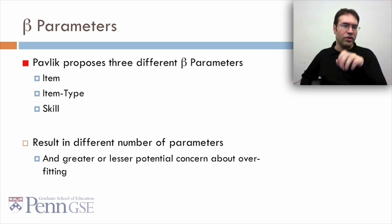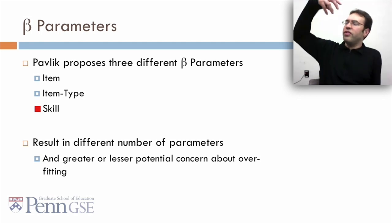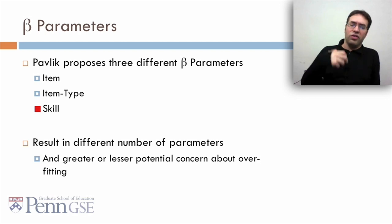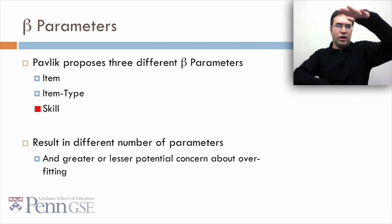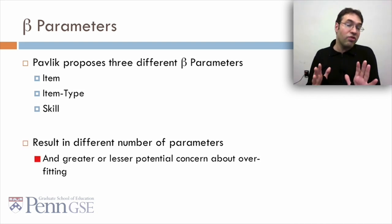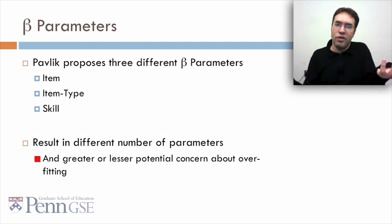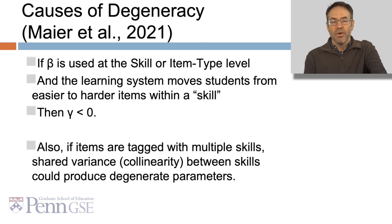So for beta parameters, Pavlik proposes three different beta parameters: Item, item type, and skill. These three approaches result in different numbers of parameters, and greater or lesser potential concern about overfitting. The more parameters, the more risk of overfitting. Beta is a big part of what causes degeneracy in PFA and LKT in general. If beta is used at the skill or item type level, and the learning system moves students from easier to harder items within a skill, then you're going to get gamma being less than zero. Also, if items are tagged with multiple skills, then shared variance, aka collinearity, between skills could produce degenerate parameters.